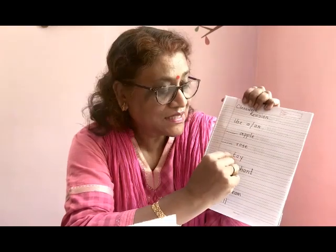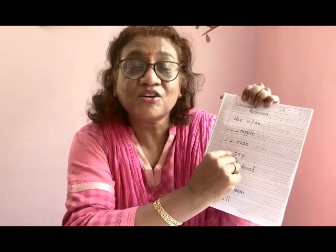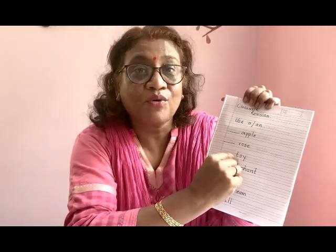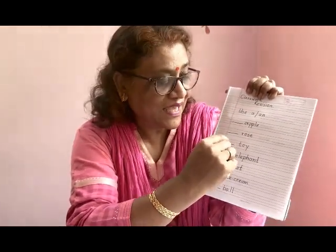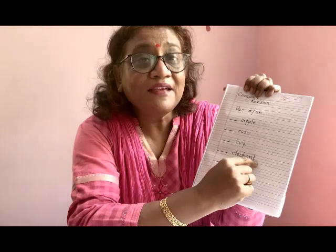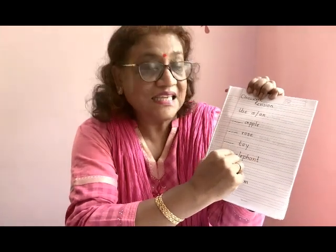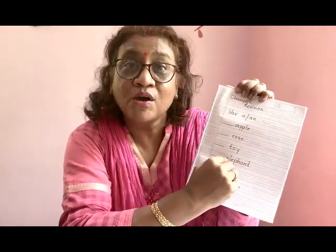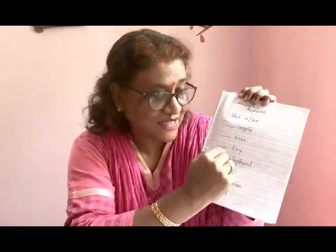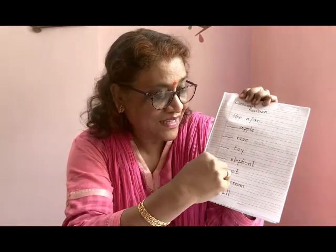Toy — T, it is a consonant, so what will you write? A. Elephant — E, E is a vowel, so what will you write in front of elephant? An.